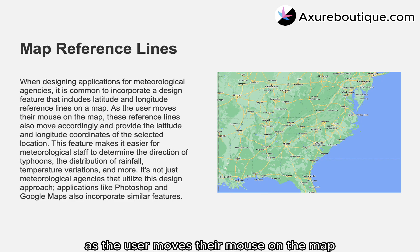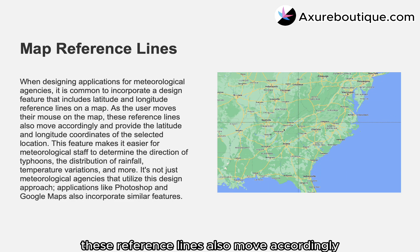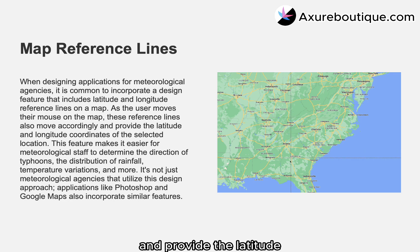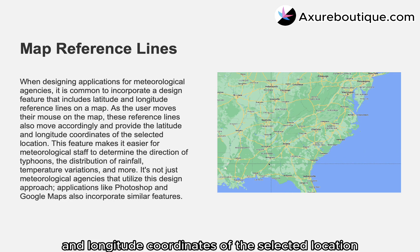As the user moves their mouse on the map, these reference lines also move accordingly and provide the latitude and longitude coordinates of the selected location.